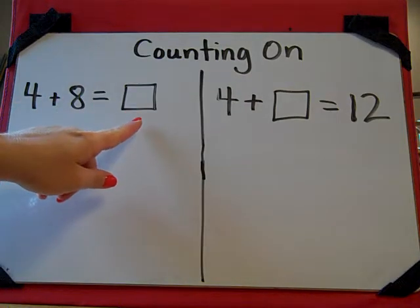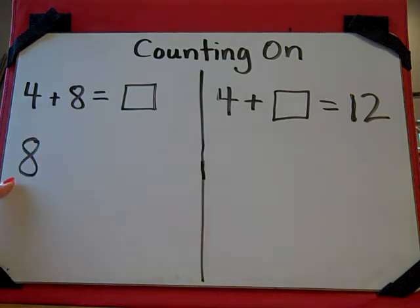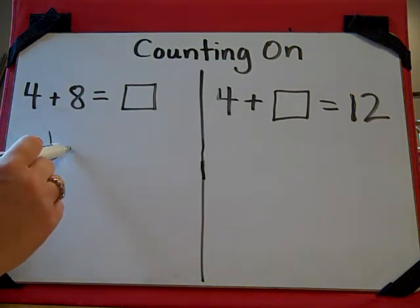When counting on to find an unknown total, you start with the greater addend, which is 8, and you're going to add 4 more.